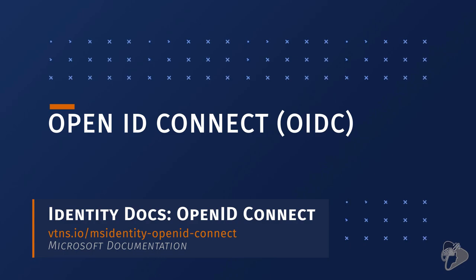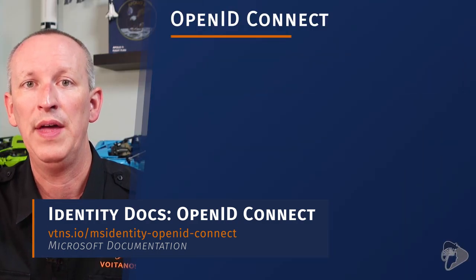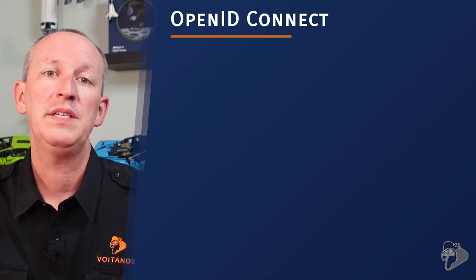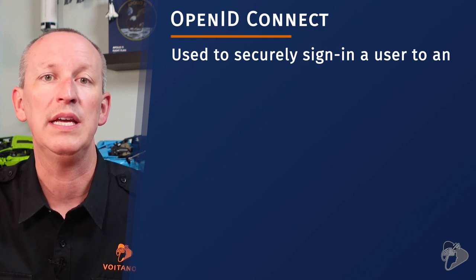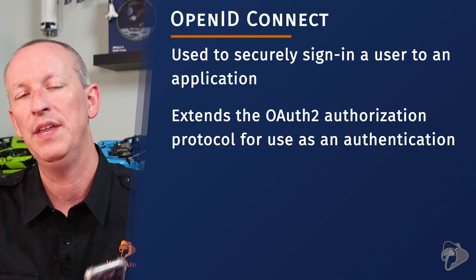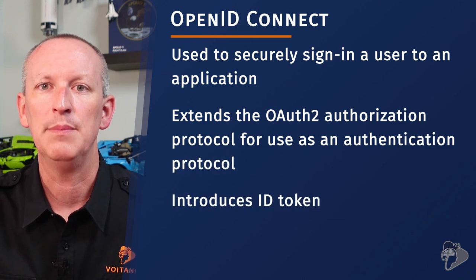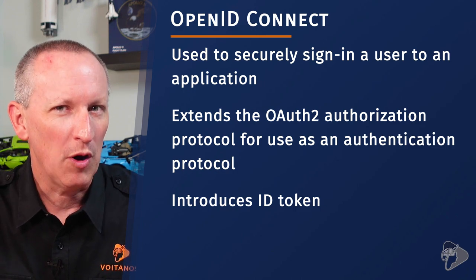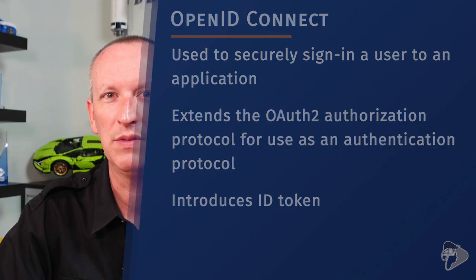Now let's talk about OpenID Connect. This is an authentication protocol built on top of the OAuth 2 protocol. It allows you to implement single sign-on using OAuth, because OpenID Connect extends the OAuth 2 authorization protocol for use as an authentication protocol. It introduces the concept of an ID token used to identify a user. You should be familiar with OpenID Connect for the exam, but you don't need to know all parts of the protocol — just understand how it fits into Microsoft Identity, how it's used to implement SSO, and what ID tokens are.